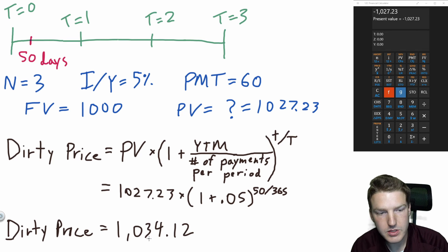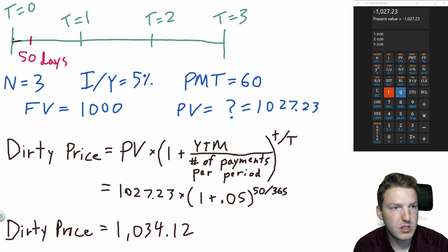You'll notice that this dirty price is higher than the normal present value because when we move in time, we went from this initial maturity date to 50 days, all of these payment dates got closer, which means that they're going to be discounted by less because we don't have to wait as long to receive those payments.